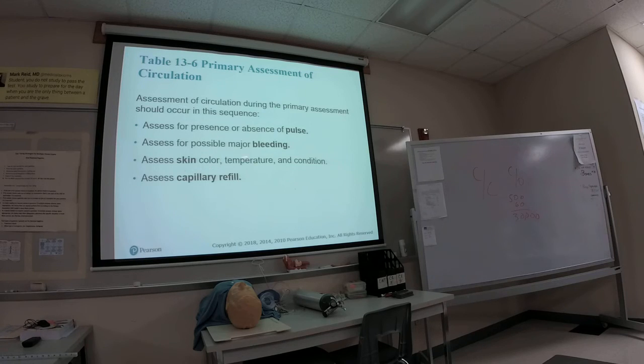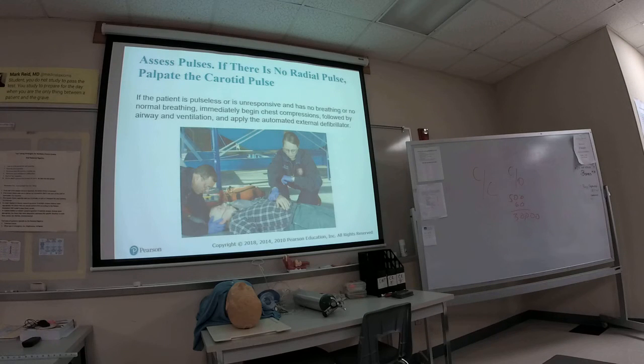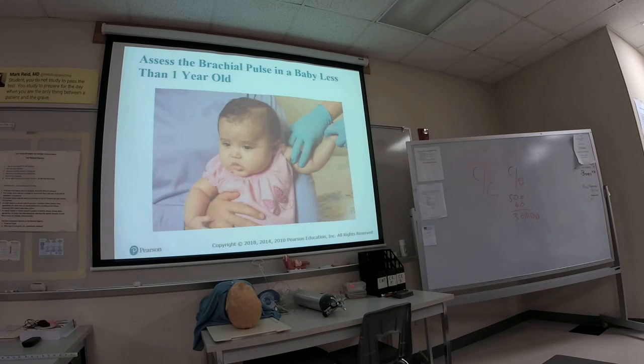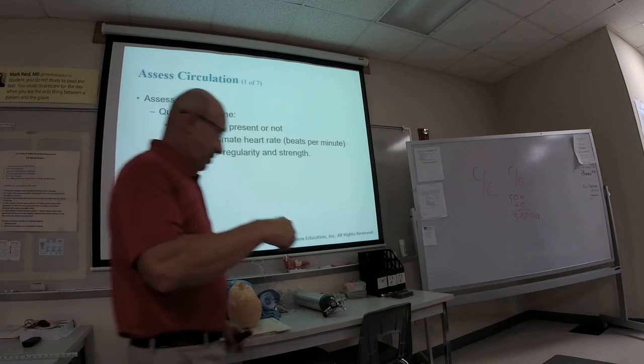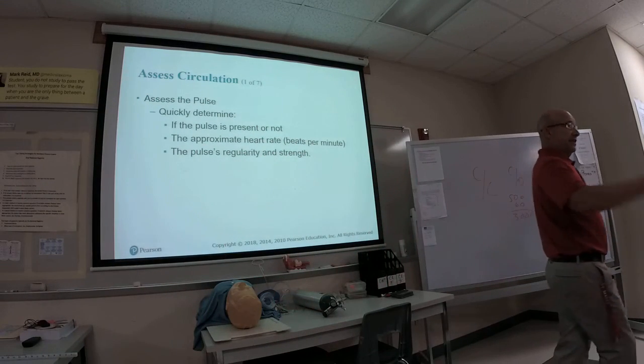Part of the C, the circulation, the pulse, any major bleeding. If you notice on your skill sheet, the skin is also on there for circulation. Are they warm, pink, and dry? Or are they somewhere else? And does it have capillary refill less than what? Two seconds. Two seconds, right. So check... For an unconscious person, you would check a carotid pulse. For a conscious person, you would check a radial pulse. For a child, you can check the brachial pulse. For an infant, for a child, you would go ahead and check a radial pulse.